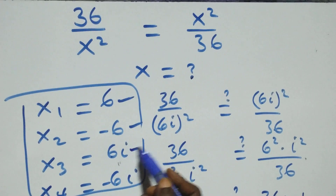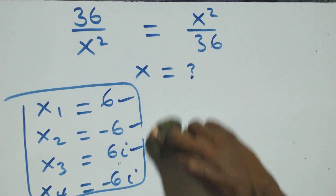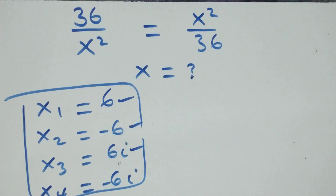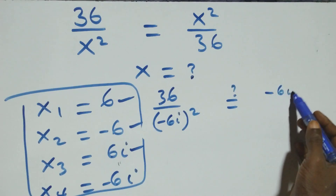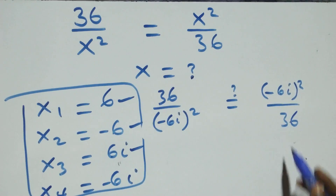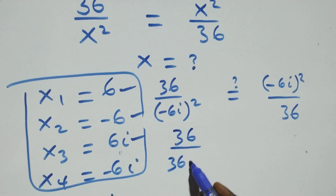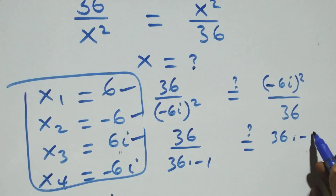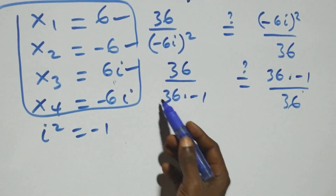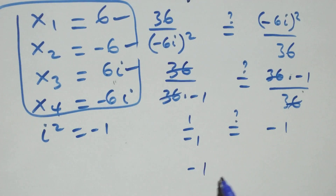We also substitute x equals −6i. Similarly, (−6i) squared gives 36 × i squared = −36, so 36 over −36 equals −36 over 36, giving −1 = −1. Left hand side equals right hand side, so −6i also satisfies the given problem.